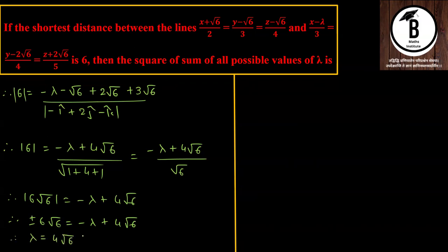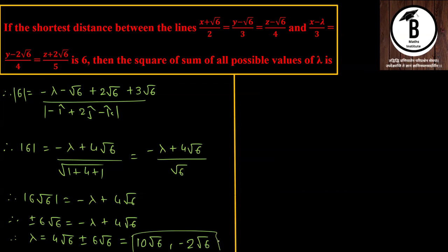Solving: λ = 4√6 ± 6√6. Taking the plus sign gives λ = 10√6, and taking the minus sign gives λ = 4√6 − 6√6 = −2√6. So two possible values of lambda are obtained.